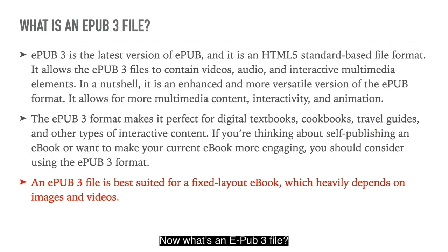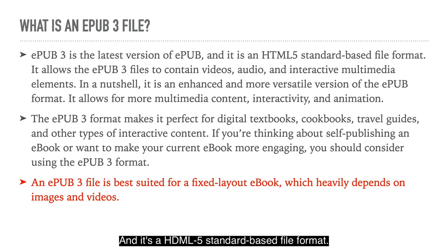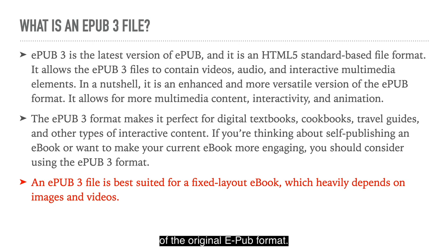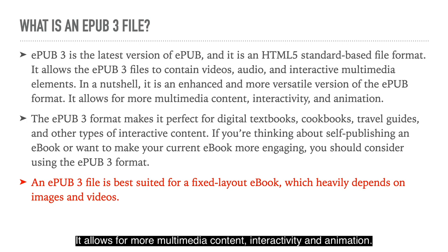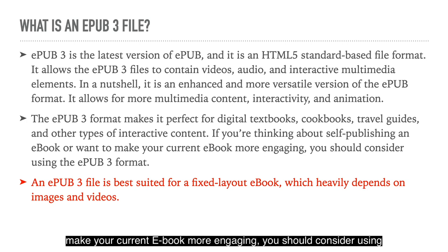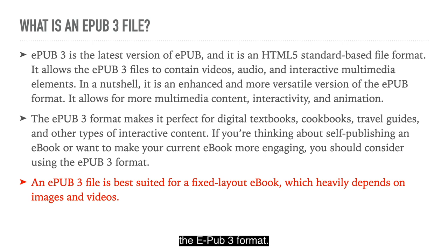What's an EPUB3 file? EPUB3 is the latest version of EPUB, and it's an HTML5 standard-based file format. It allows EPUB3 files to contain videos, audio, and interactive multimedia elements. In a nutshell, it's an enhanced and more versatile version of the original EPUB format. It allows for more multimedia content, interactivity, and animation. The EPUB3 format makes it perfect for digital textbooks, cookbooks, travel guides, and other types of interactive content. If you're thinking about self-publishing an eBook or want to make your current eBook more engaging, you should consider using the EPUB3 format.